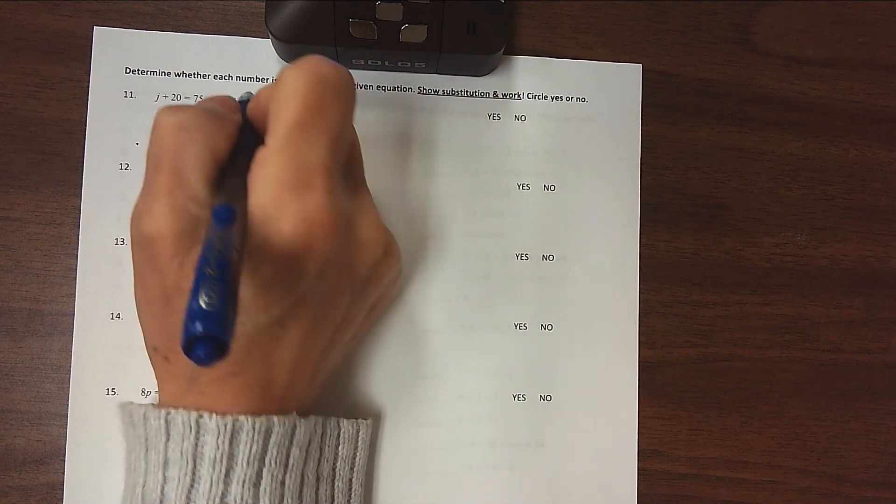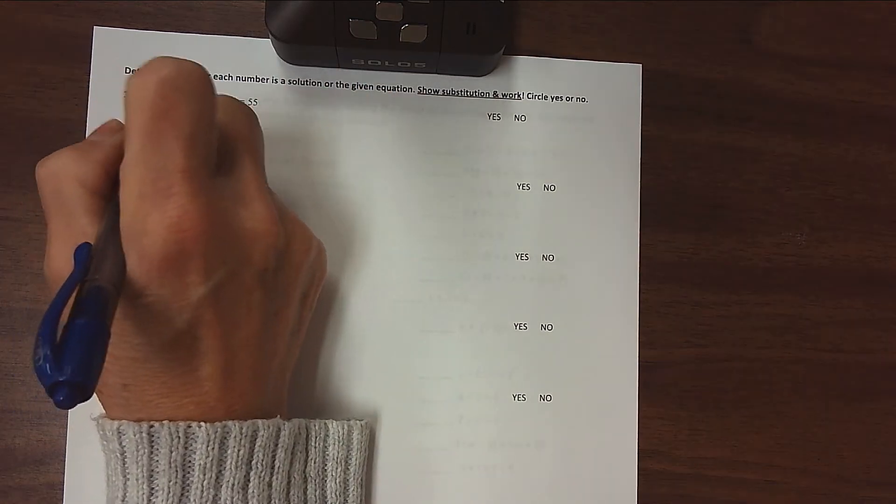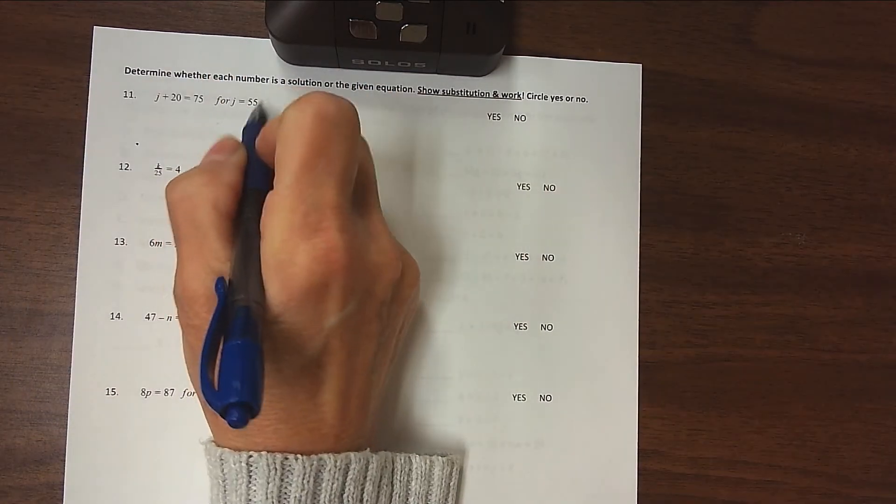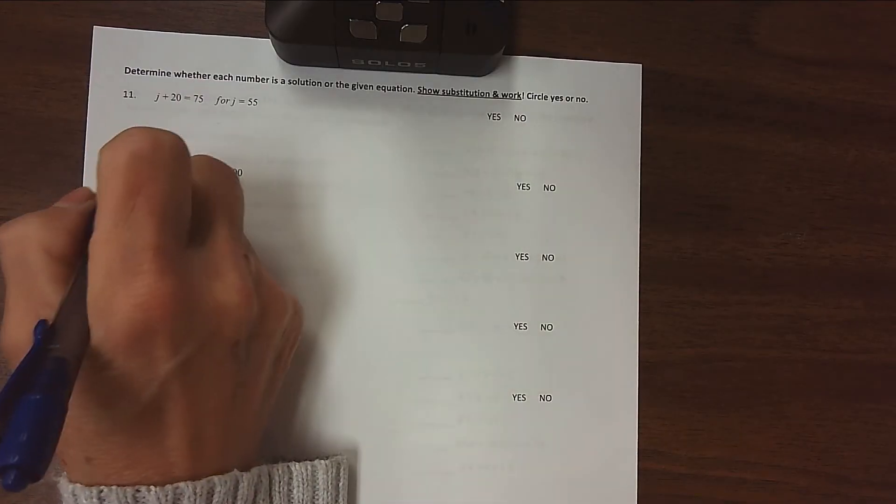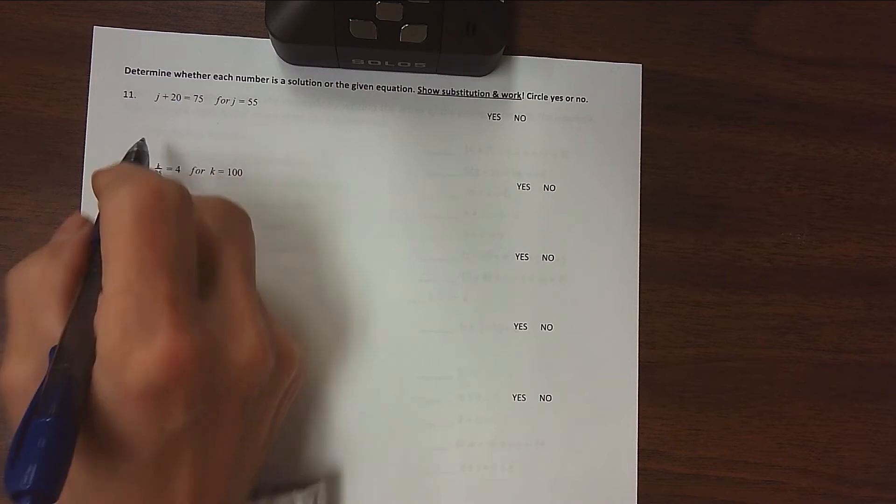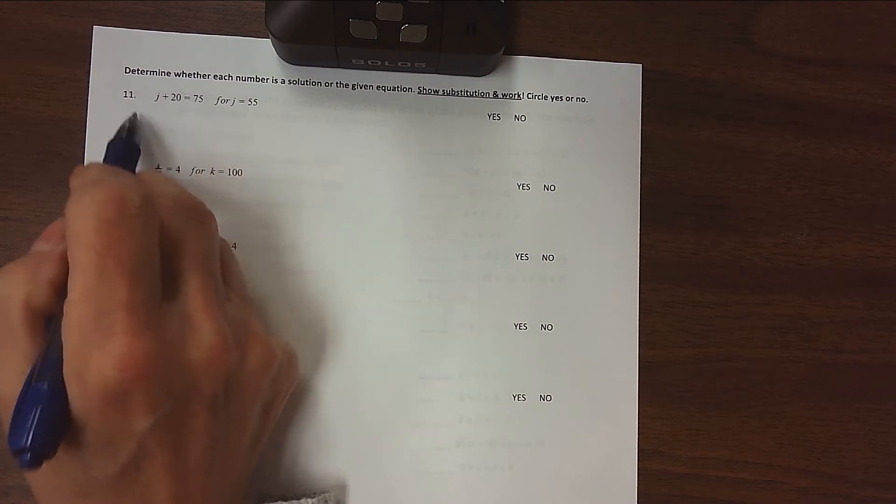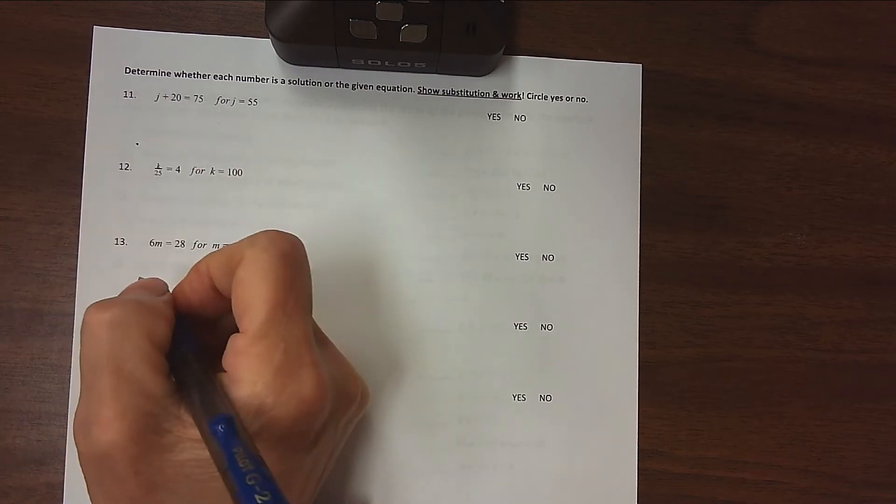What we're going to do on these problems is take out the variable, substitute in or replace it with the number, and see if it makes a true statement. This isn't like the expressions where we had to figure them out. We're going to figure out this side and see if it's equal to the other side of the equal sign.